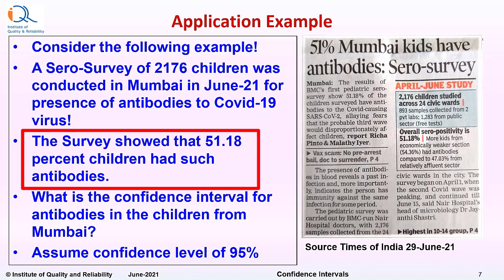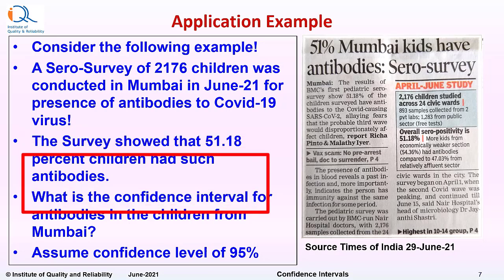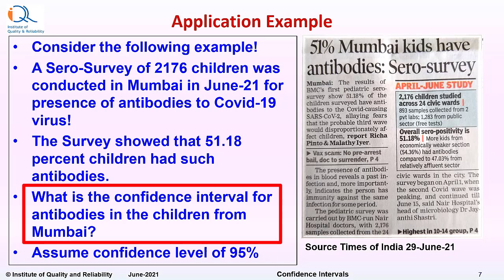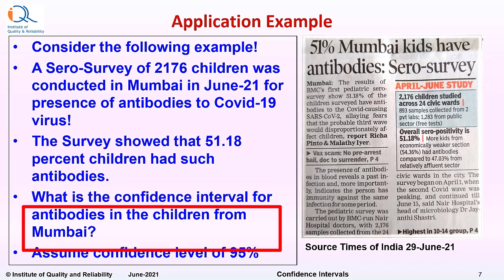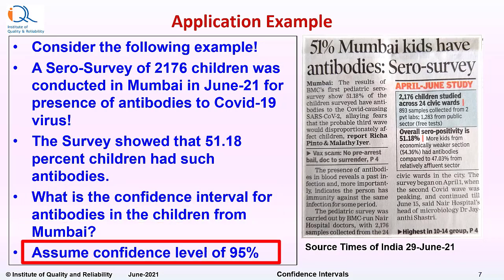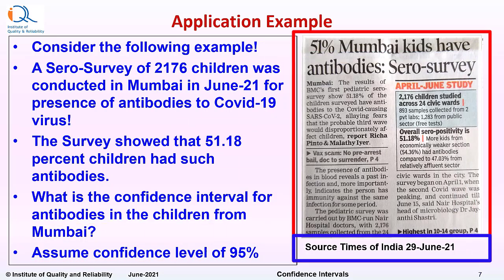The survey showed that 51.18% children had such antibodies. What is the confidence interval for antibodies in the children from Mumbai? Assume confidence level of 95%. Source of this information is Times of India, 29 June 2021.